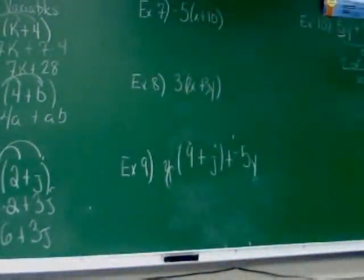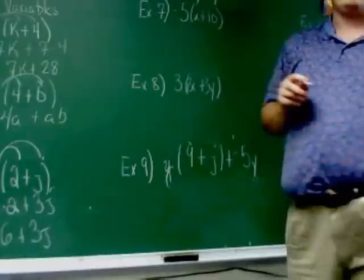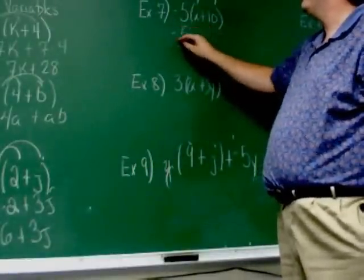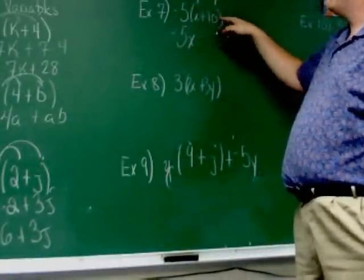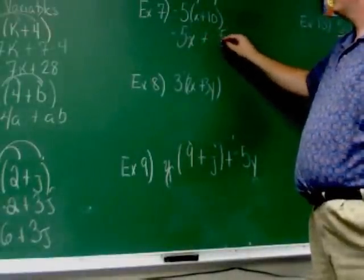Alright. Example 7: Negative 5 times parentheses X plus 10. So what two things do I have to carry negative 5 through to? Right. I carry through to X and 10. Yeah, exactly. So negative 5 to the X, negative 5X. Negative 5 times 10, negative 50.